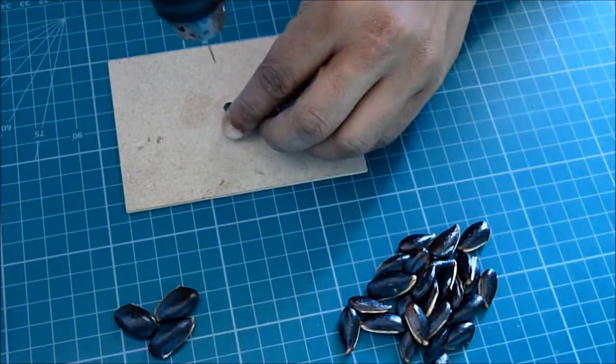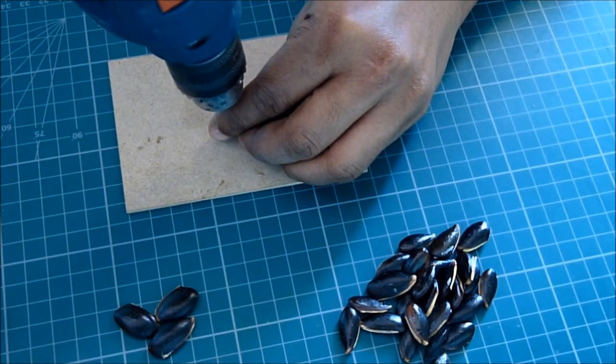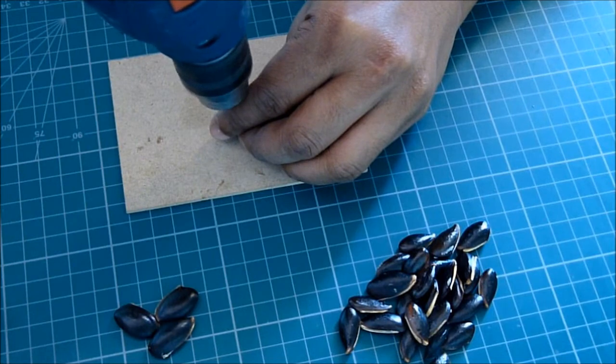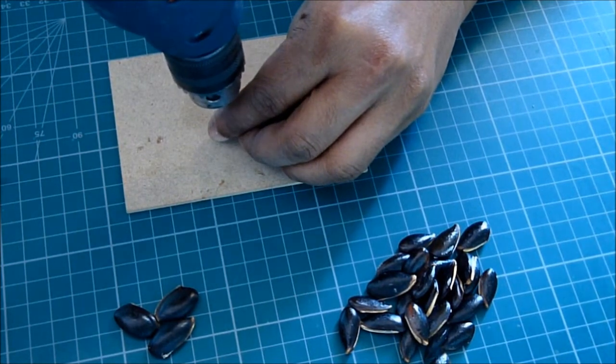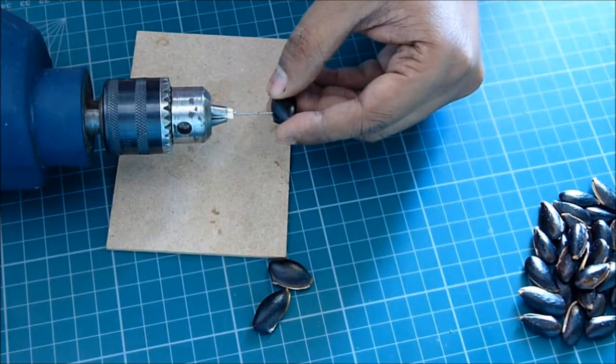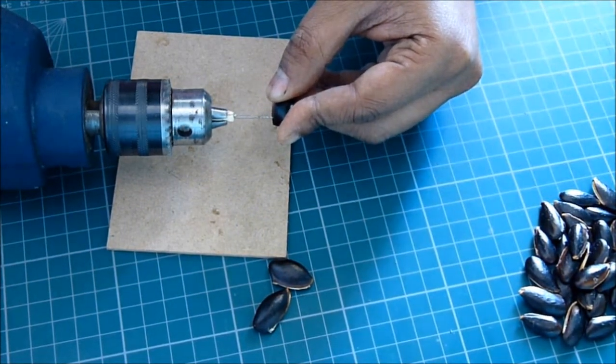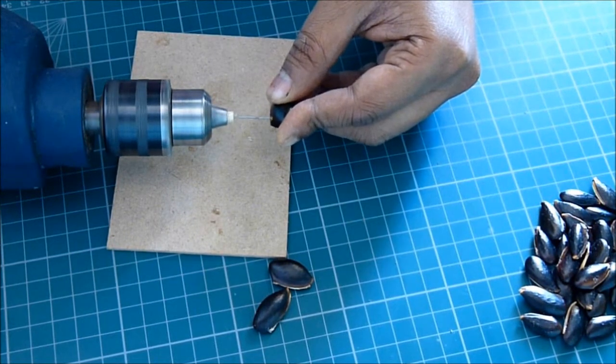For all the seeds, you make a hole using a drill like this. But for the center big seeds, you have to make a hole from side to side, like this.